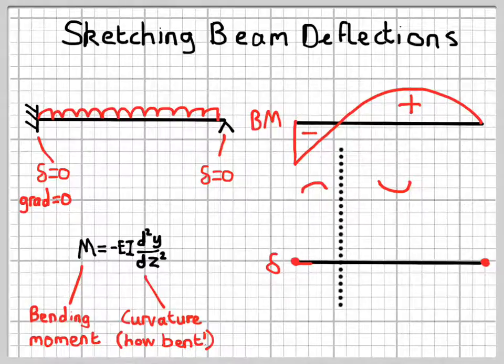Between these two regions is a point on the beam known as a point of contra-flexure, where the beam is straight. There's no bending at all.